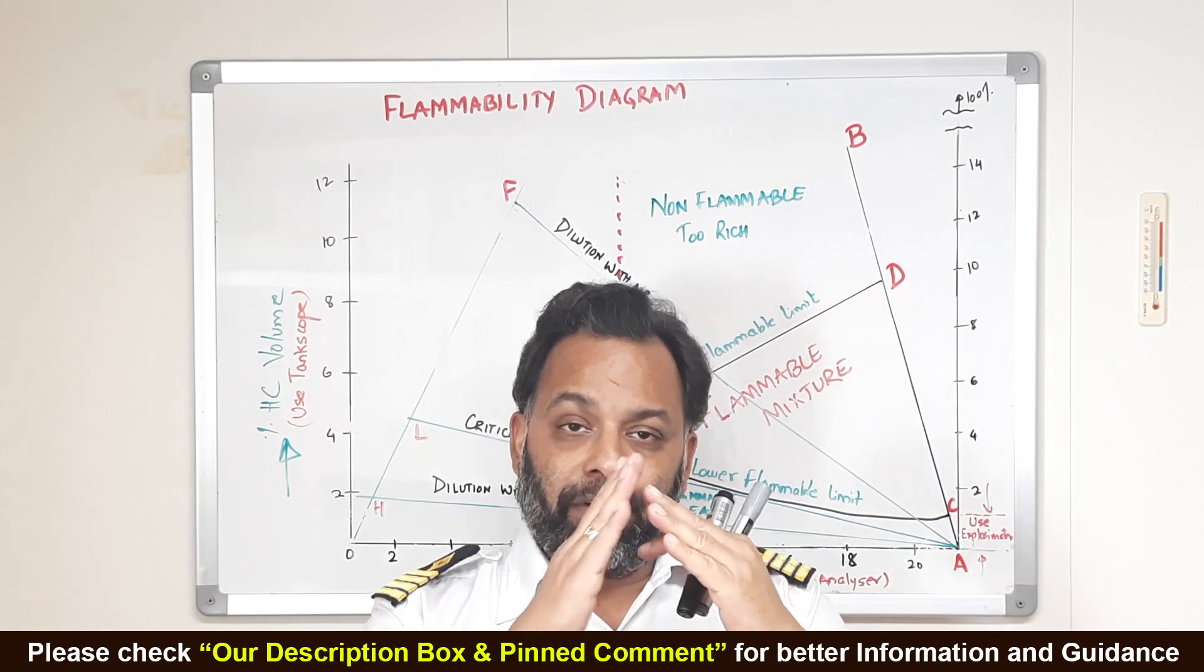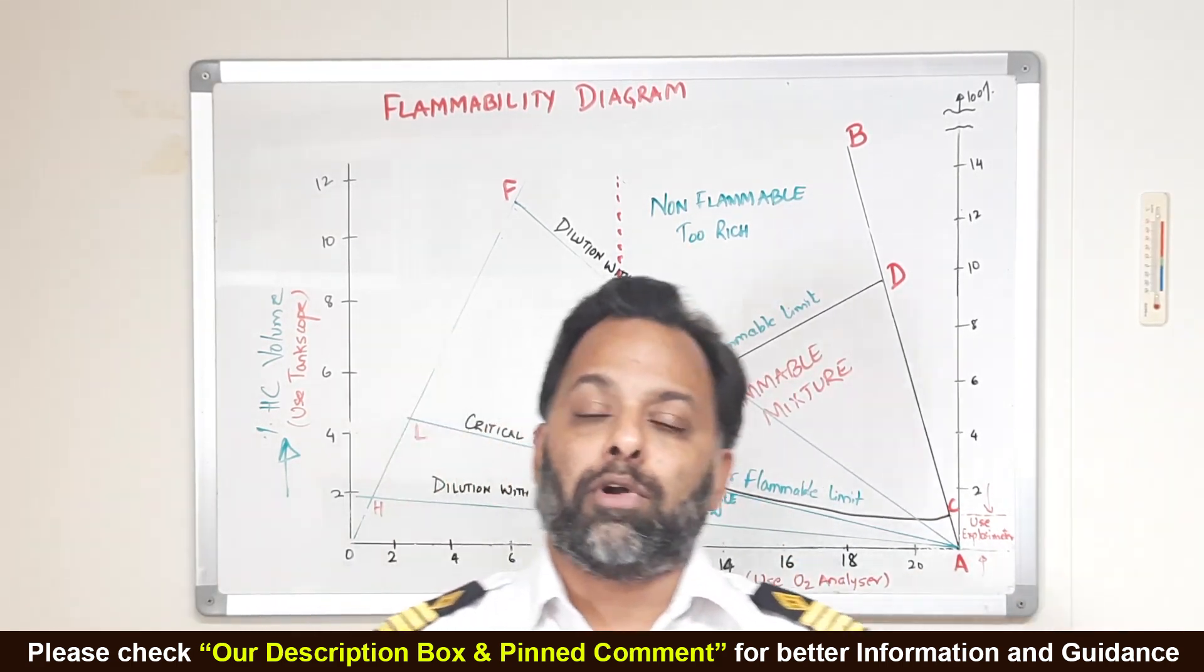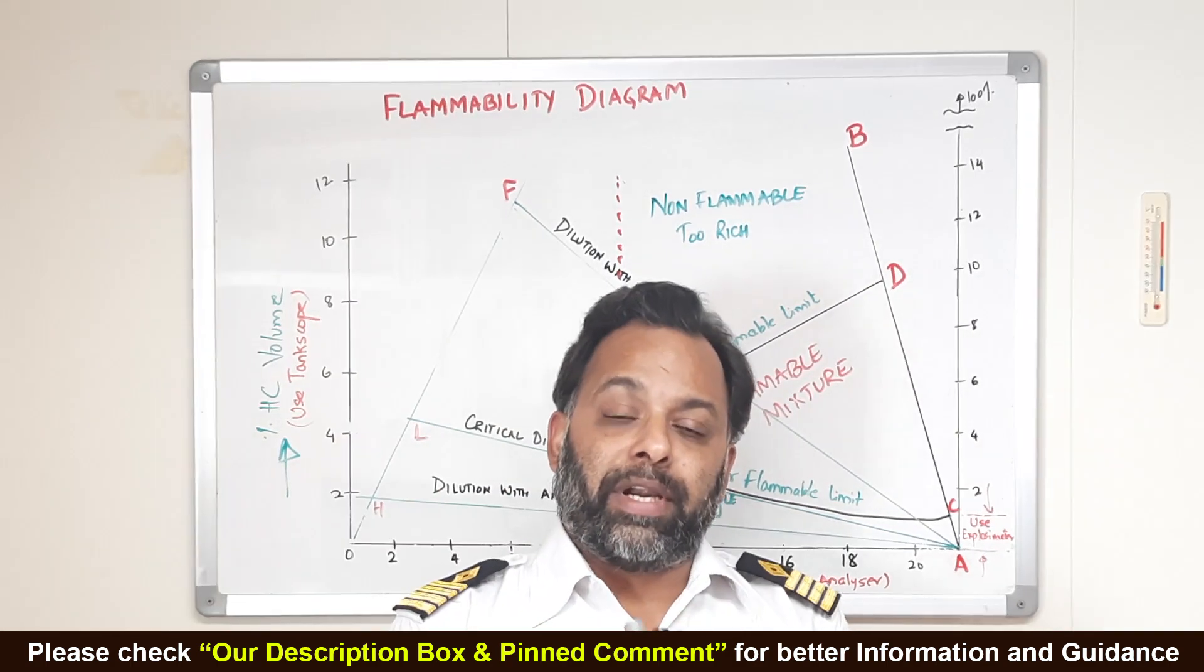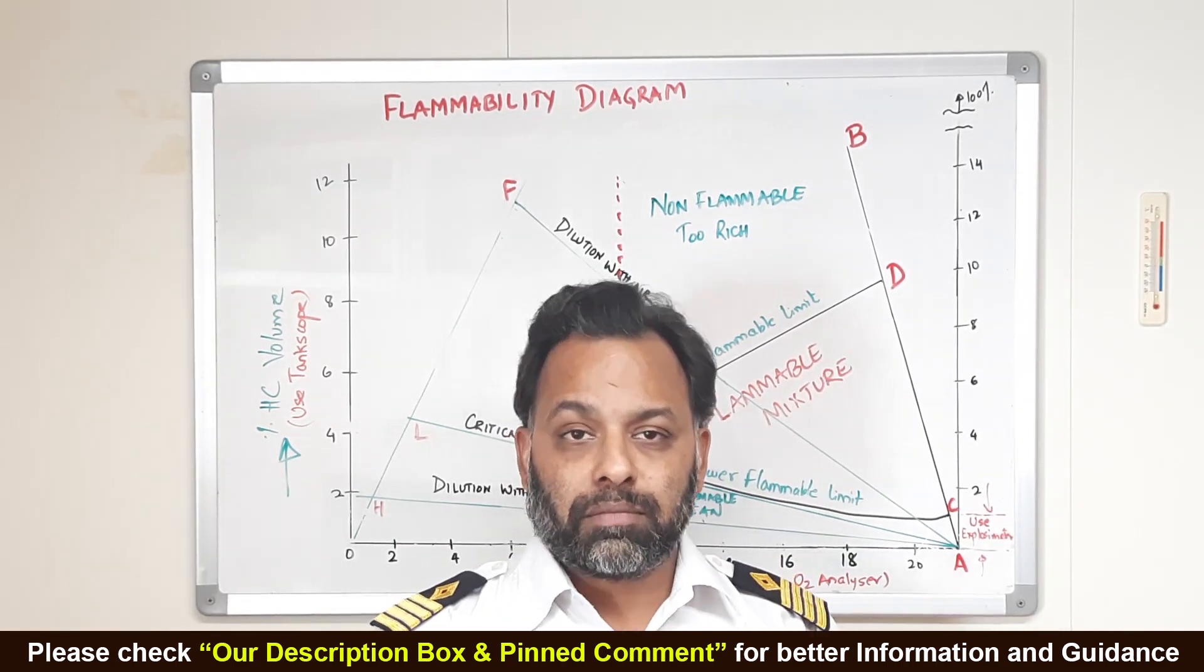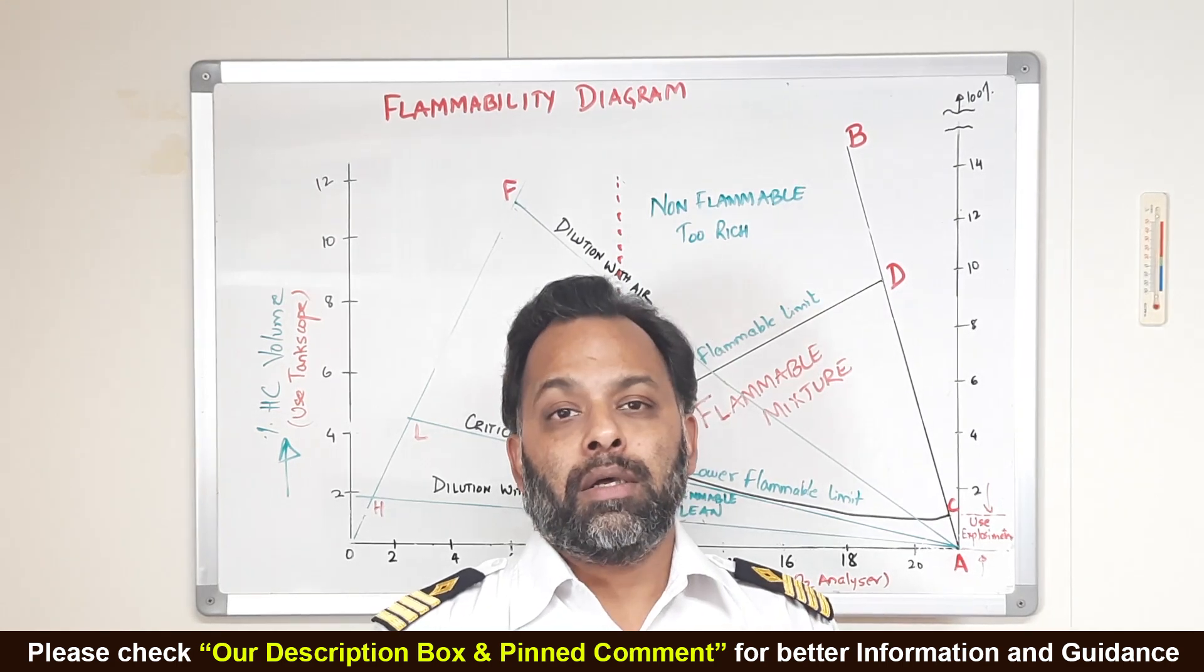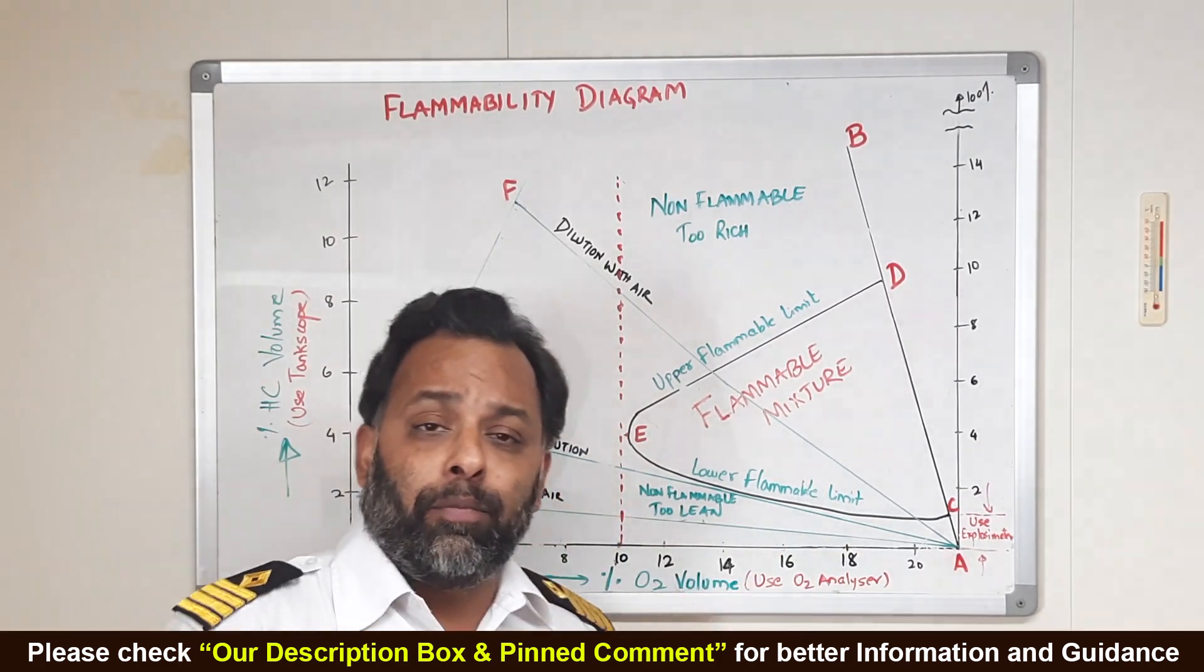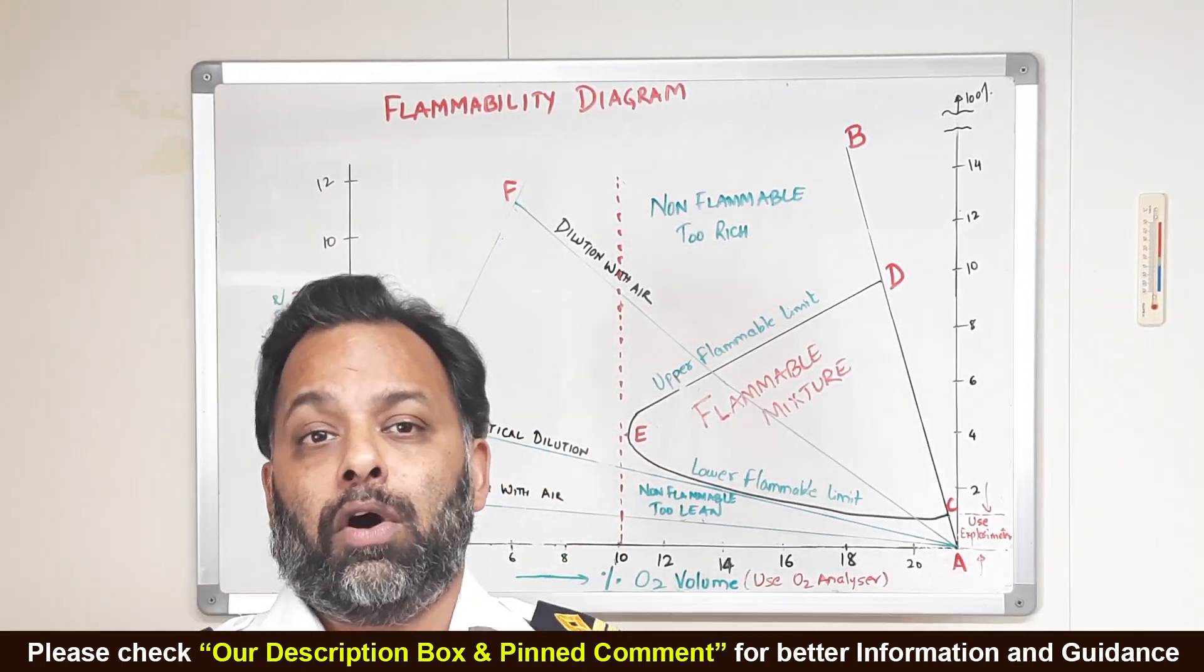Instead of inert gas, we sometimes also use nitrogen gas. We have nitrogen generators wherein we generate, we separate nitrogen from air and we supply this nitrogen to the tank so that there is no conducive atmosphere for fire to take place. Now, this flammability diagram is very important for the safe operation, safe cargo operation on tankers.